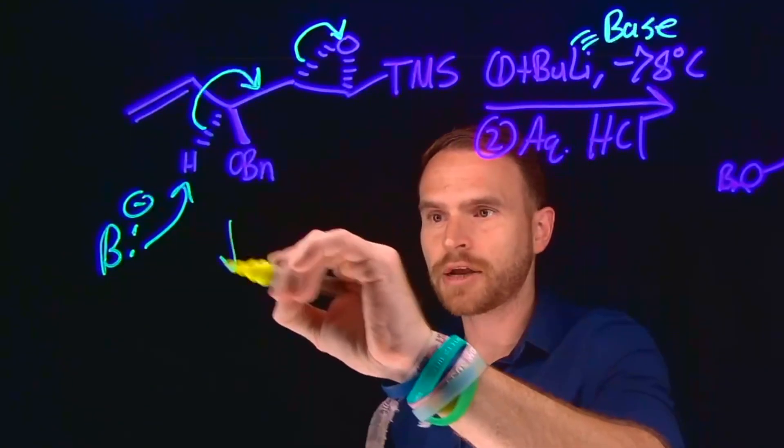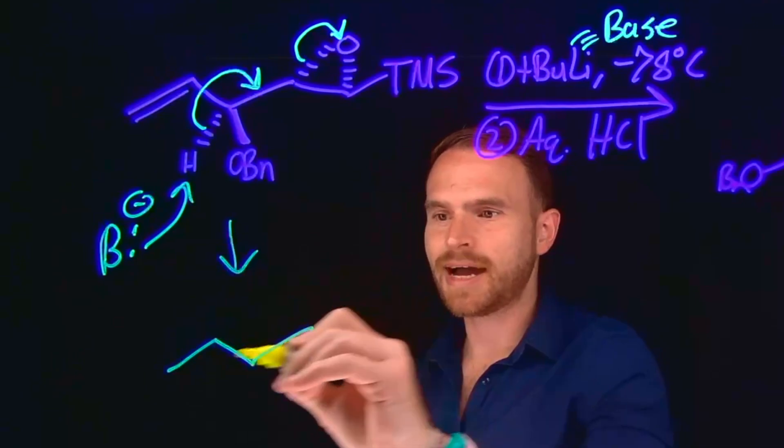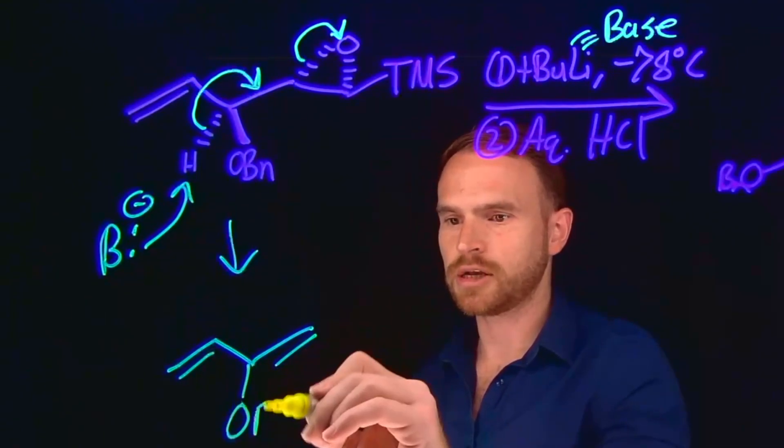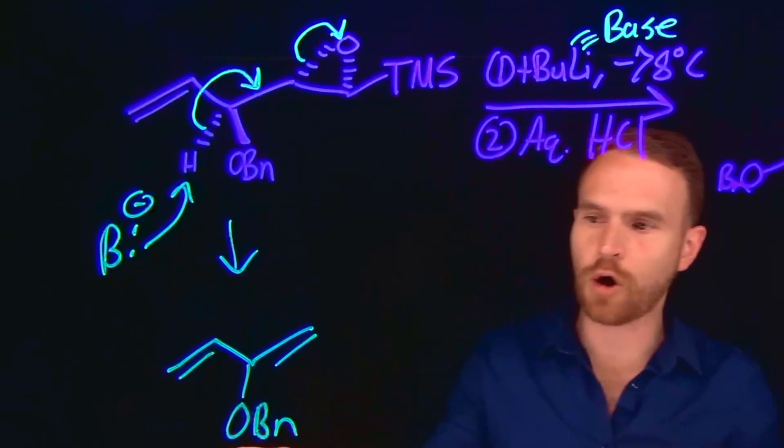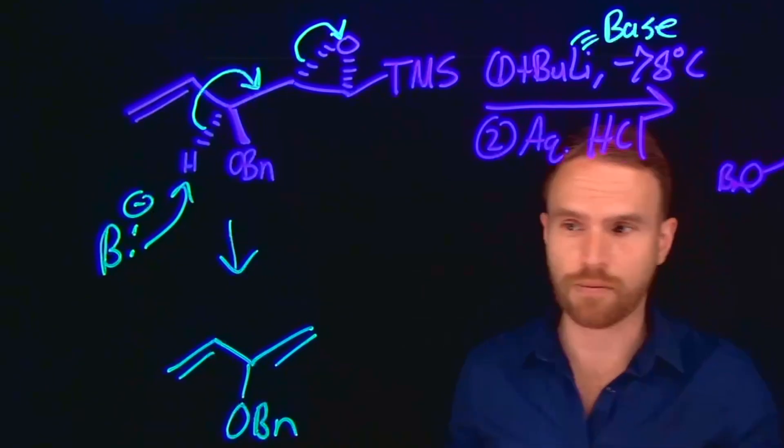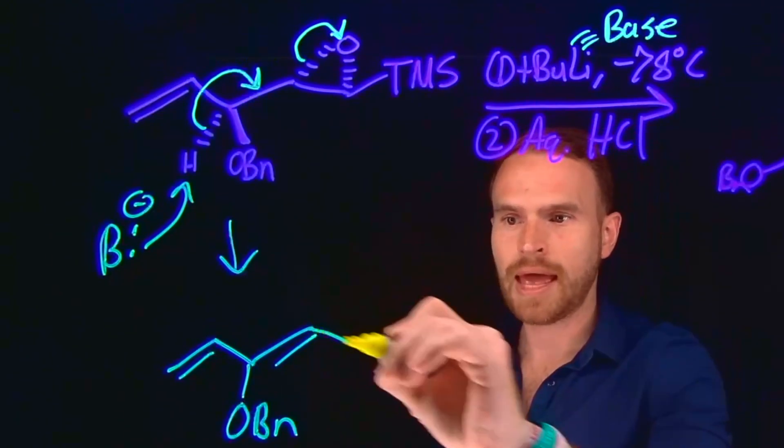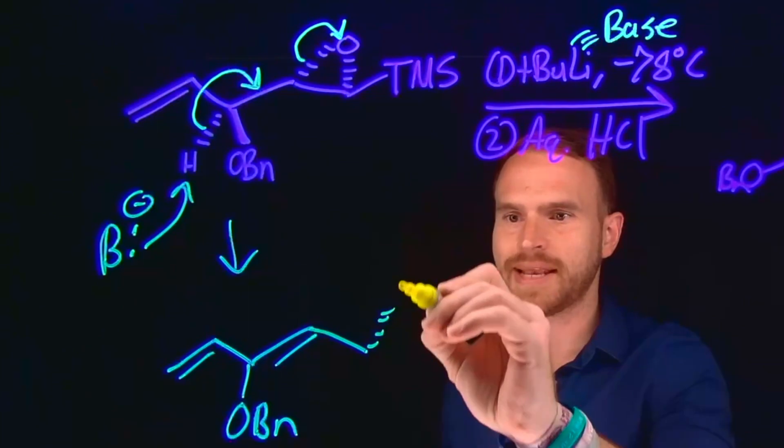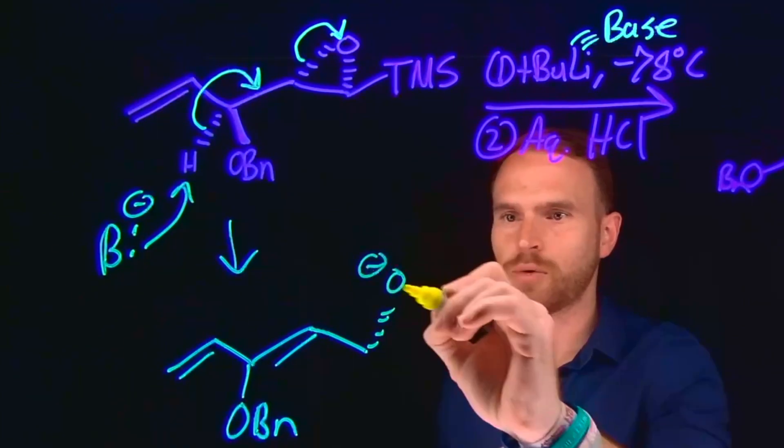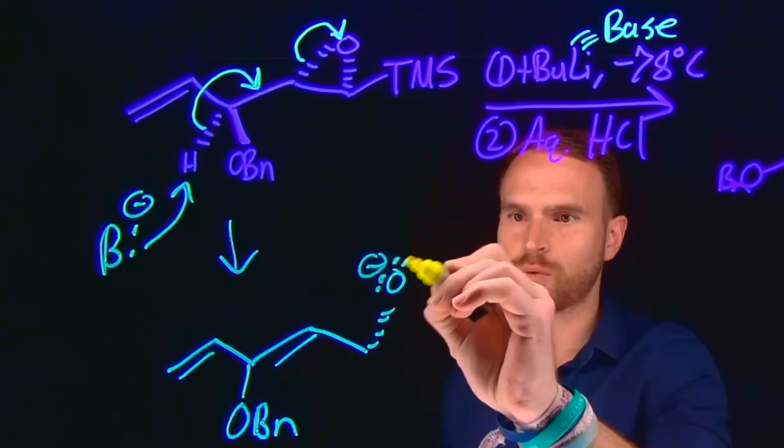So this gives us a product where now we're forming a conjugated diene in this process where the benzyl ether is going to be located here. And this OBn stands for benzyl ether, by the way, for those who have never seen it before. And then what we have here is going to be a negatively charged oxygen located at this position that has three lone pairs on it.